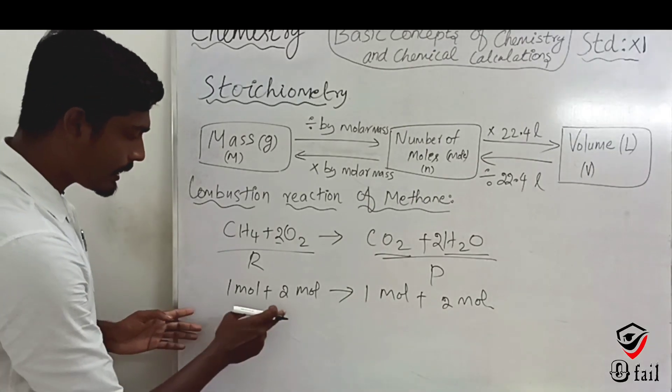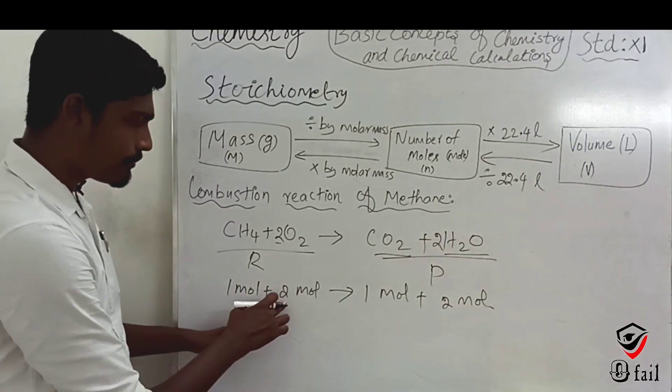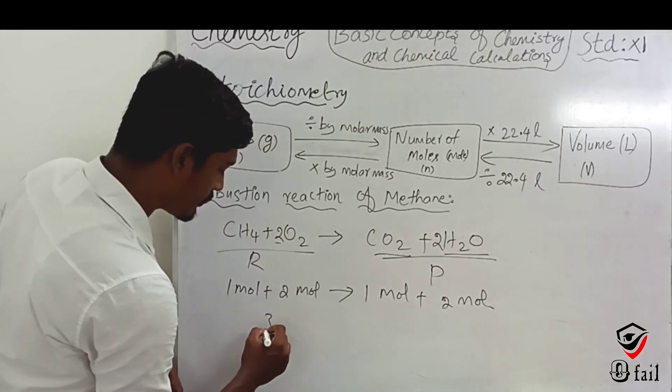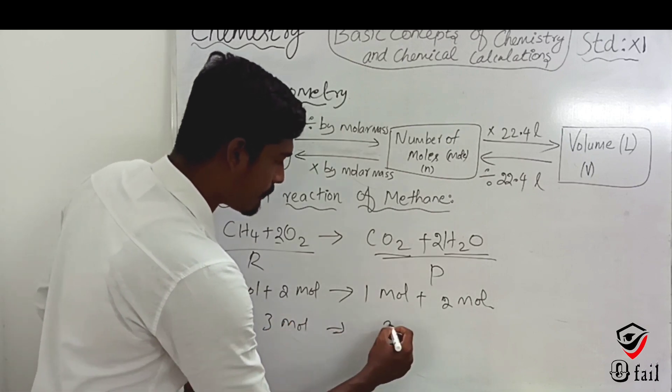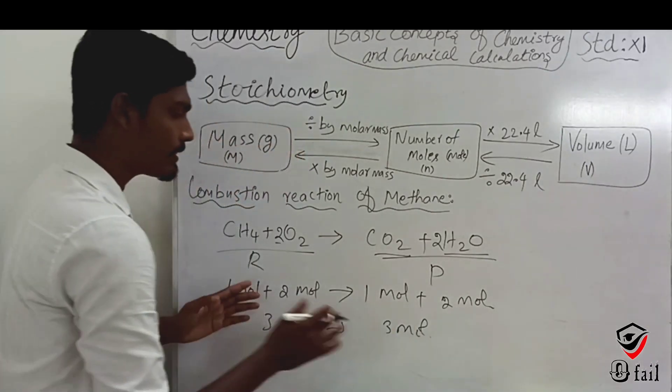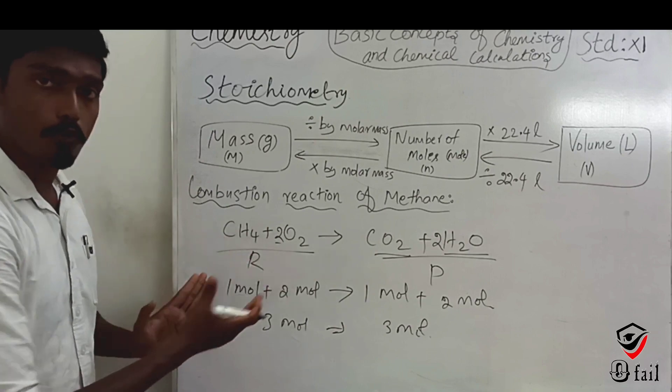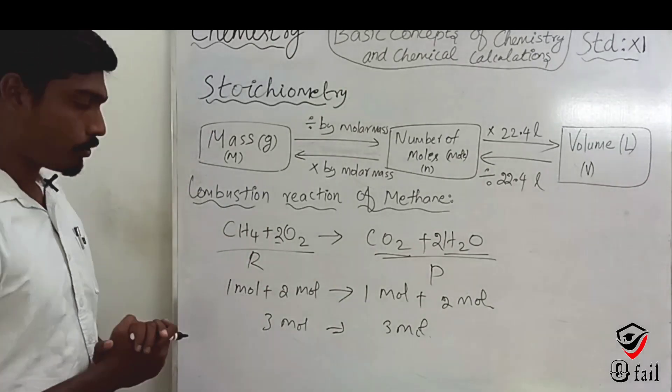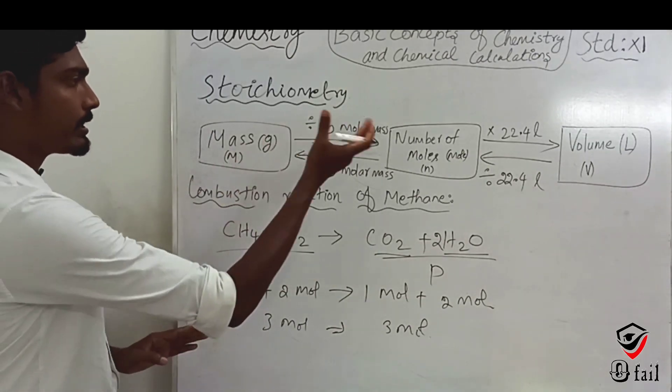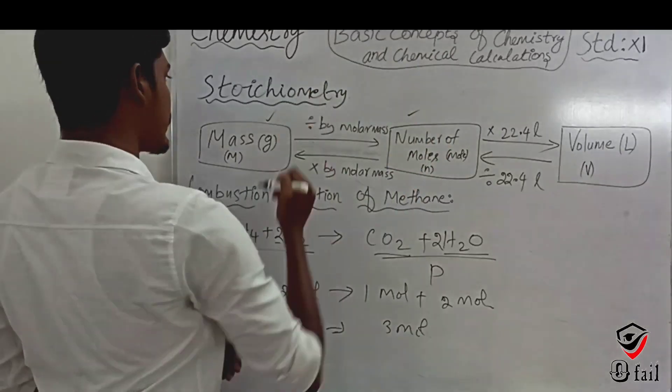We have 1 mole of methane, 2 moles of oxygen molecules, giving 1 mole of carbon dioxide and 2 moles of water. On the reactant side: 1 + 2 = 3 moles. On the product side: 1 + 2 = 3 moles. This is the relationship in terms of moles.